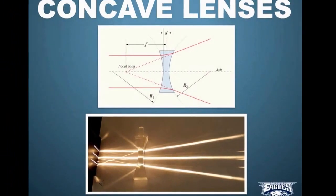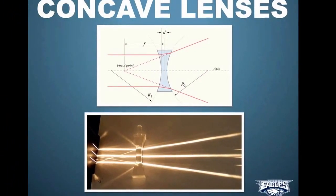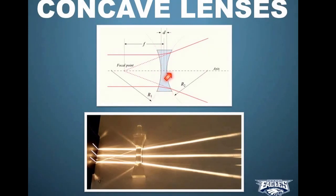A concave lens is the opposite of a convex lens. Some people call these divergent lenses because they spread light outwards. A concave lens is always going to be thick on the top and the bottom and skinny in the middle — that's how you know the difference between the two. A concave lens is always going to spread light out, while a convex lens will always focus it to a point.